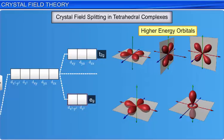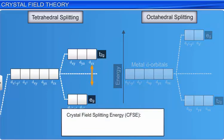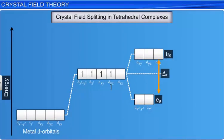The d-orbital splitting in tetrahedral geometry is exactly the reverse of octahedral splitting. The crystal field splitting in tetrahedral complexes, denoted by delta-t, is smaller than that of octahedral complexes. The difference in energy can be represented by delta-t = (4/9) × delta-O. This splitting energy is not large enough to force the electrons to get paired up. Thus, low spin configurations are rarely observed in tetrahedral complexes.